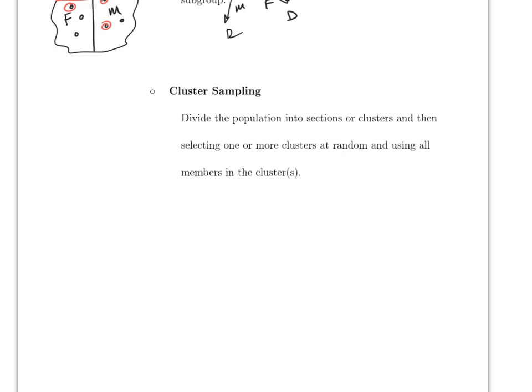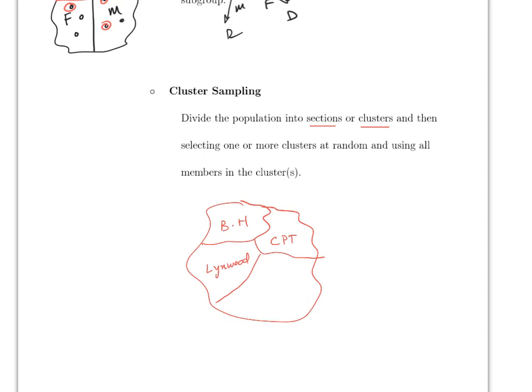The last method is cluster sampling. Here you divide the population into sections or clusters — for example, Beverly Hills, Compton, Inglewood, and Long Beach. You then randomly select a whole group or cluster. This could potentially be biased because everything is based only on the selected cluster. That's it for chapter one.